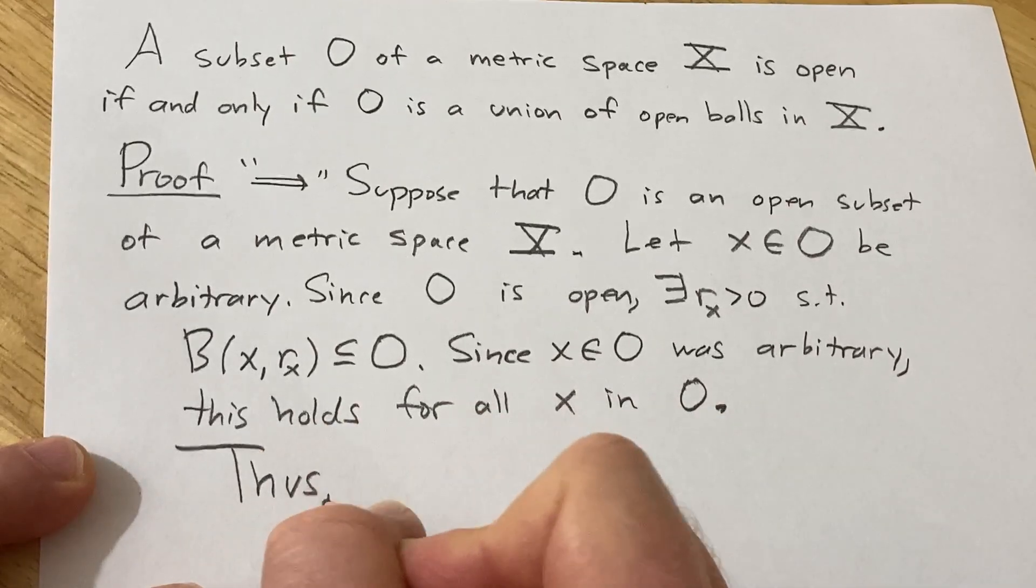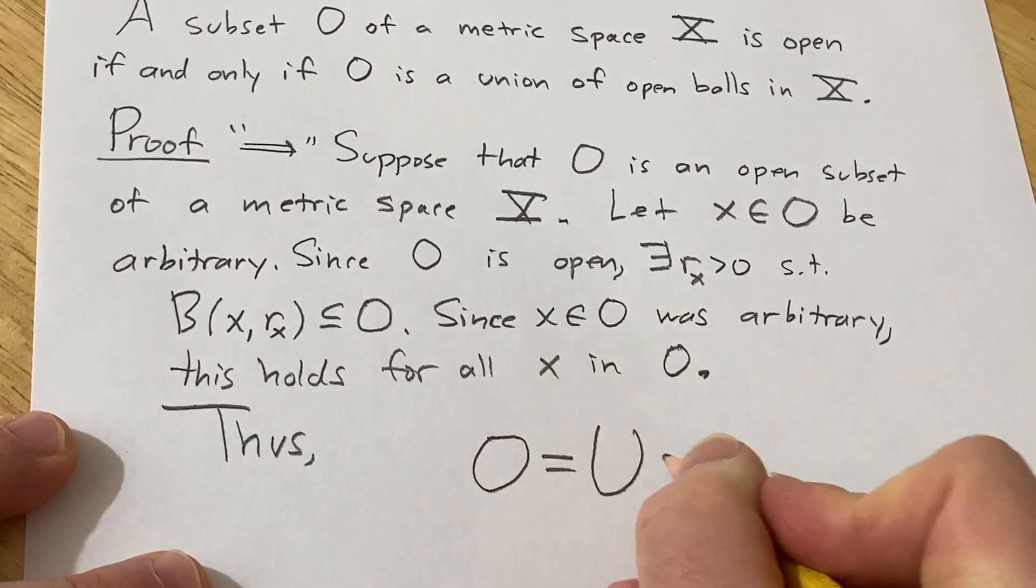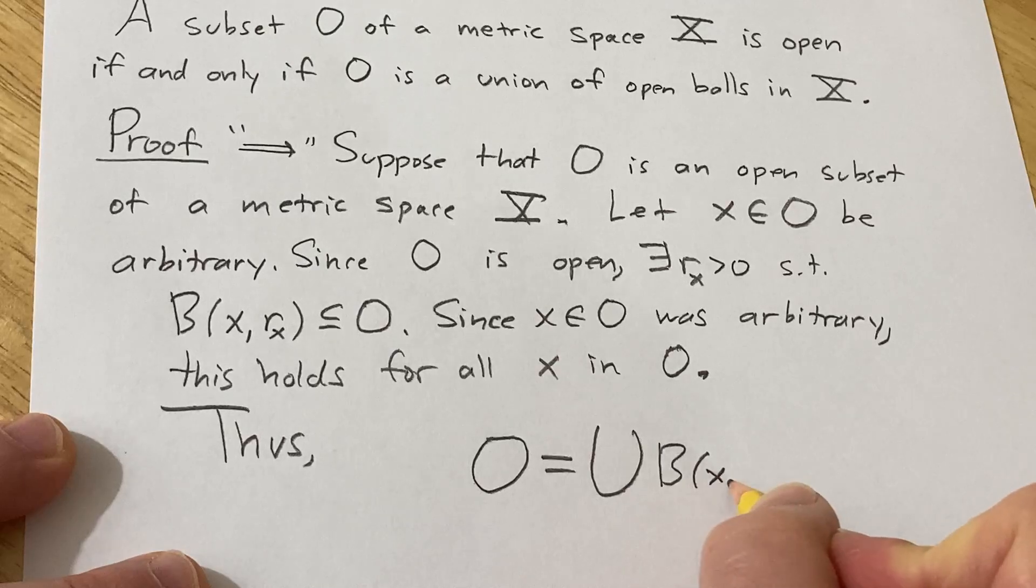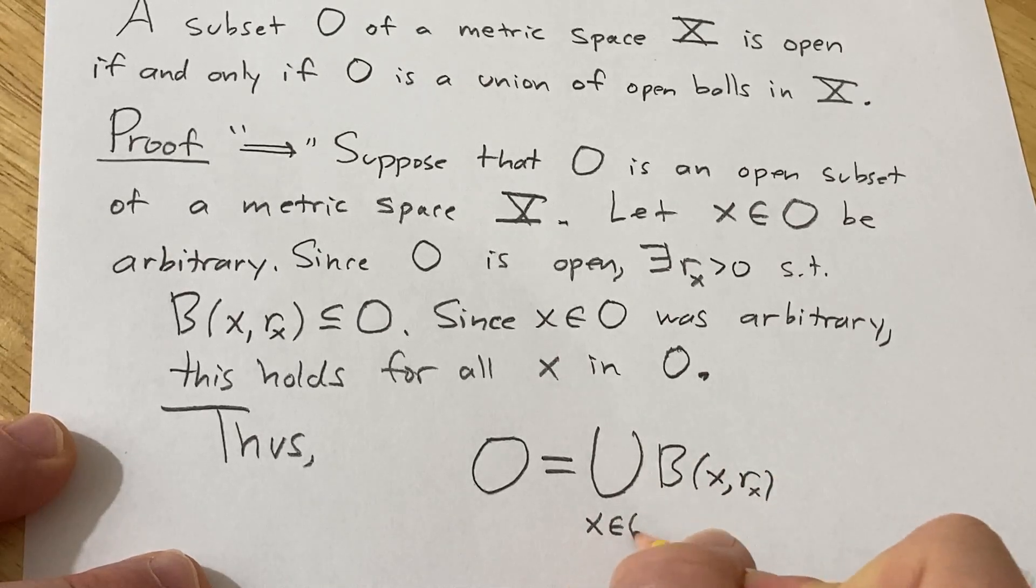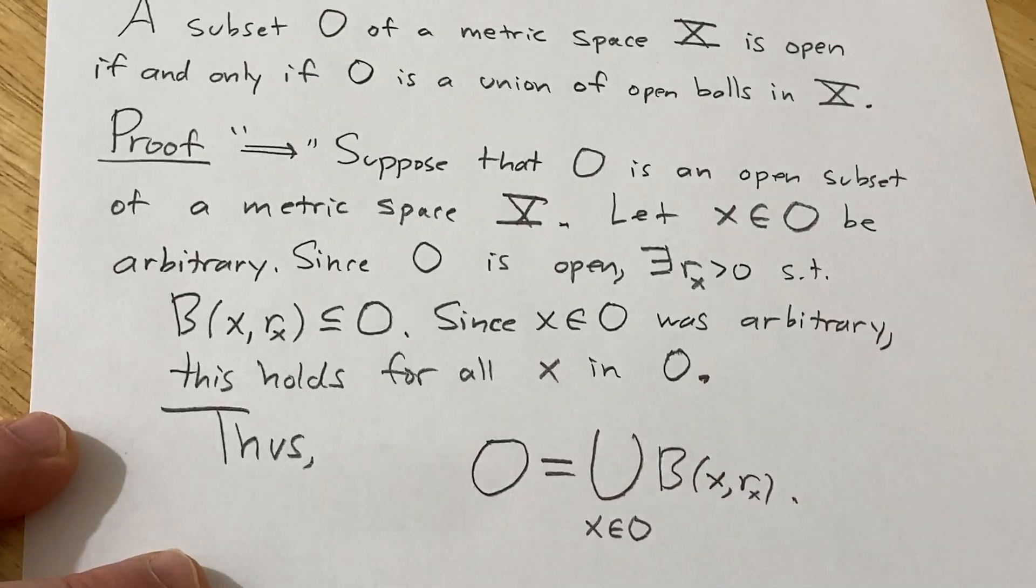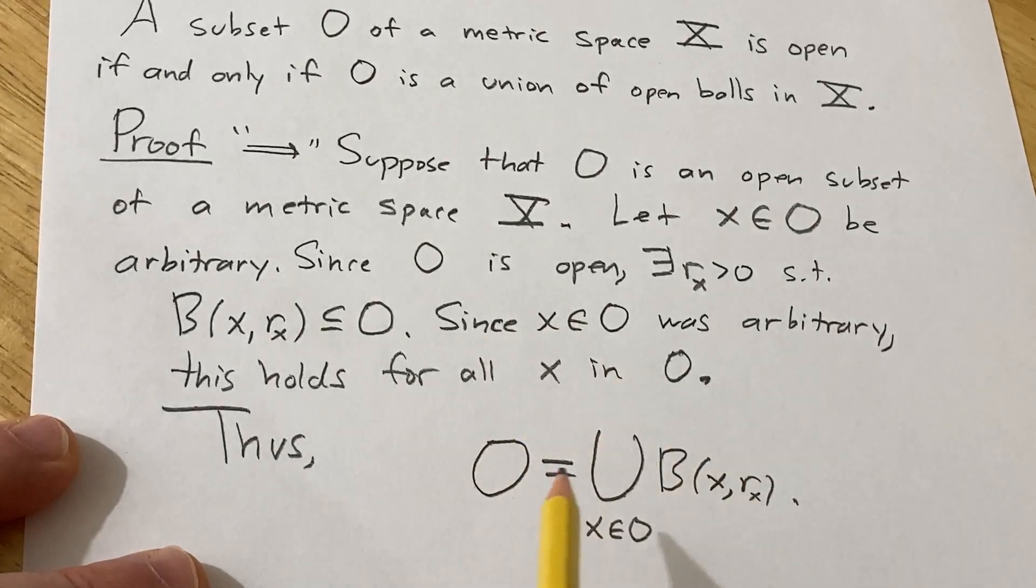Thus, and here's the key, O is a union of open balls where x here runs through O. So why, right? Why does this follow? Well, it follows and here's why. So first of all,